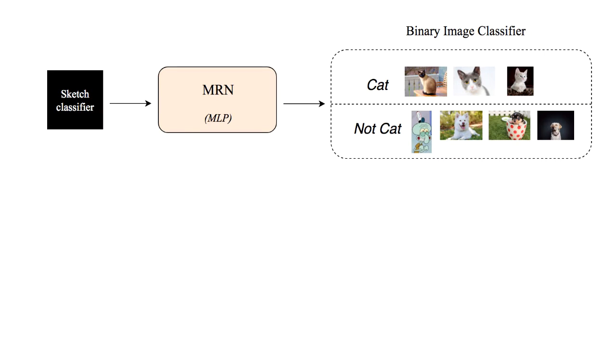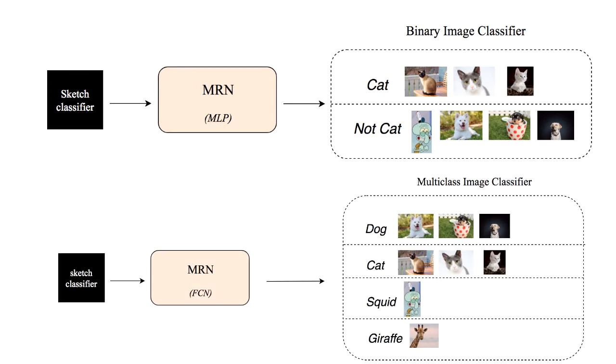I talked about the MRN and its three types, but what exactly is the model regression network? That is, what is the MRN? To synthesize a binary classifier, the MRN is a multilayer perceptron. And to synthesize a multi-class classifier, the MRN is a six-layer fully convolution network.